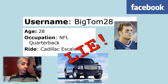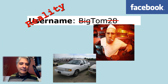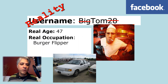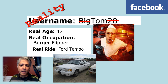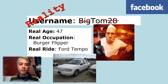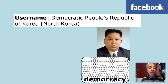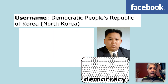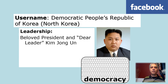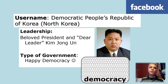If we tried to get the real information about BigTom28, his name actually is Tom, but he's not big and he's not 28 — his actual age is 47. His actual occupation is not NFL quarterback, but burger flipper. And he does not drive a Cadillac Escalade — that right there is a 1988-and-a-half Ford Tempo. North Korea calls itself the Democratic People's Republic of Korea. If you asked them, they'd present their leader as a beloved president and dear leader Kim Jong-un, and their type of government as a happy democracy. But you know darn well that that is a lie.